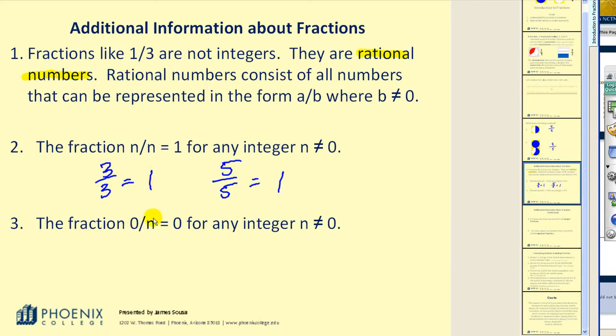Number three, the fraction zero over n is equal to zero for any integer n not equal to zero. Again, that's fairly logical. If I have three pieces but I consider zero of them, of course that would be zero. One thing I'd like to point out here, a fraction bar is another way to write division. So zero thirds represents the same thing as zero divided by three, which again of course is zero. This idea again will come up soon.